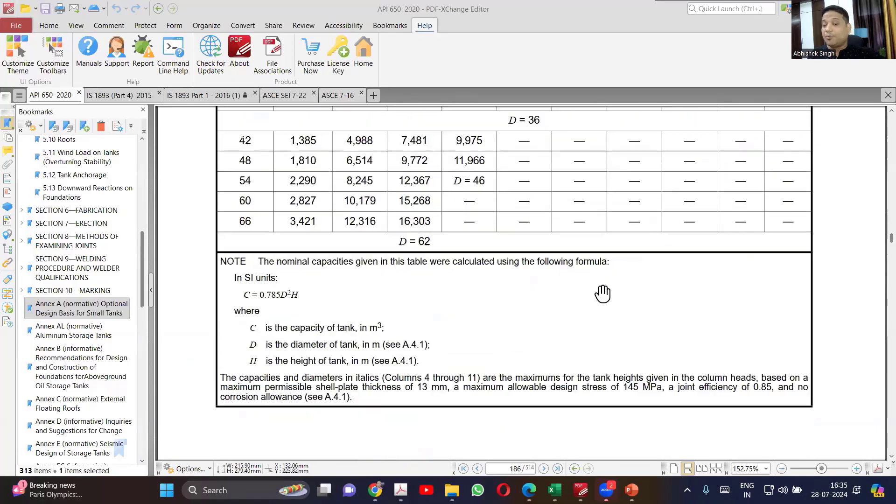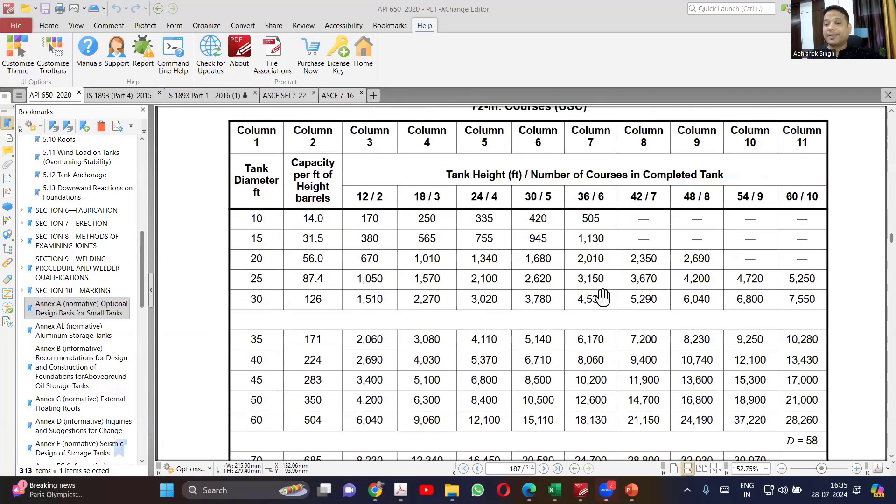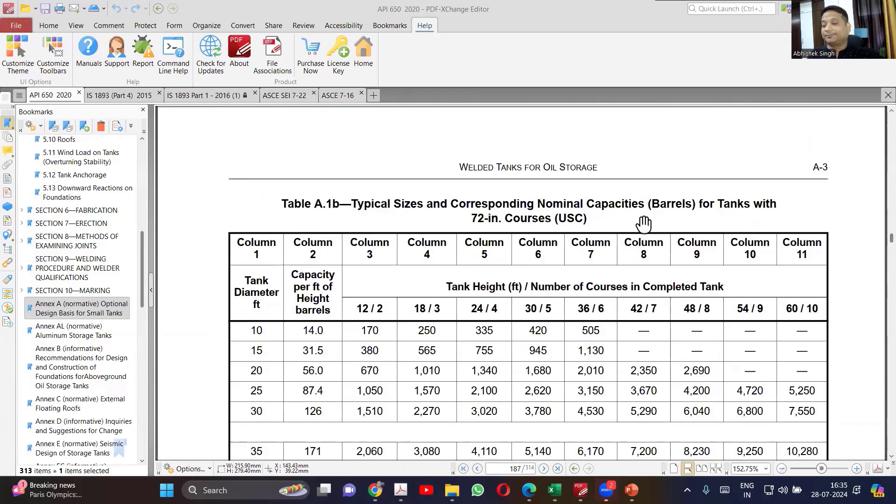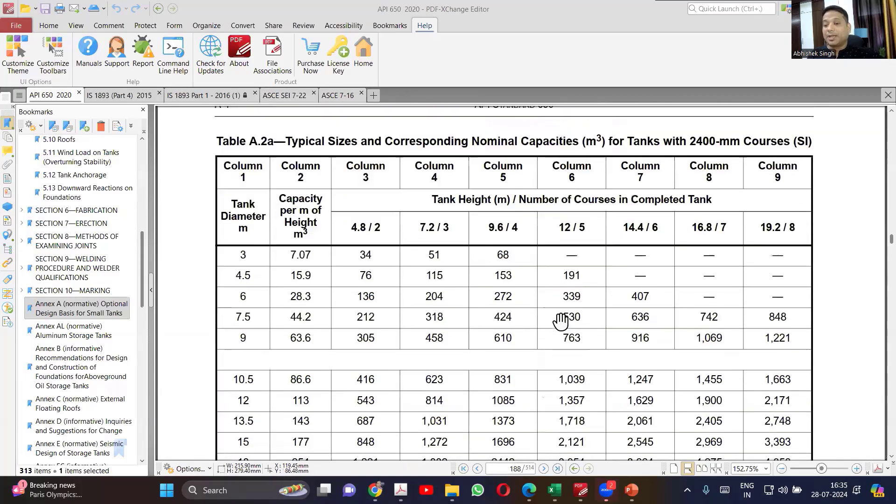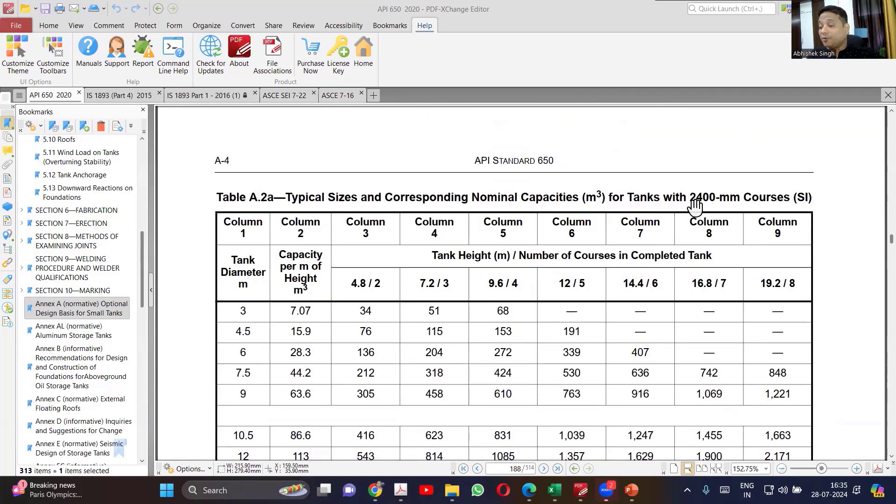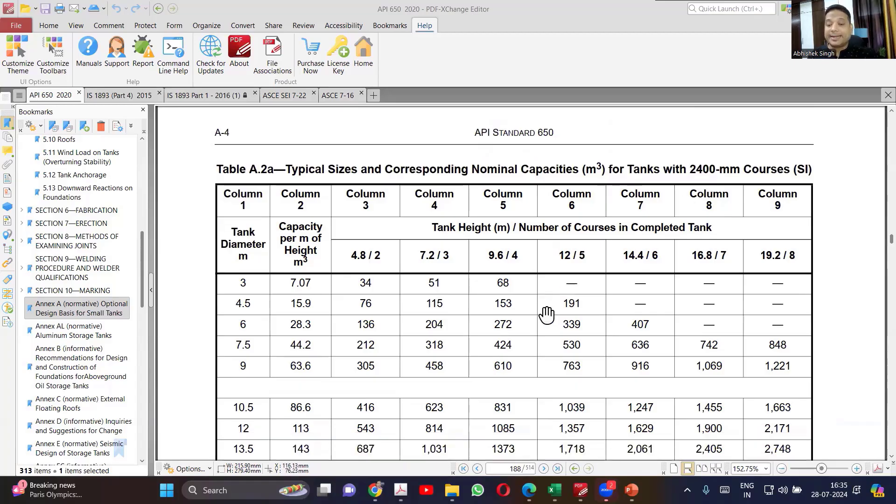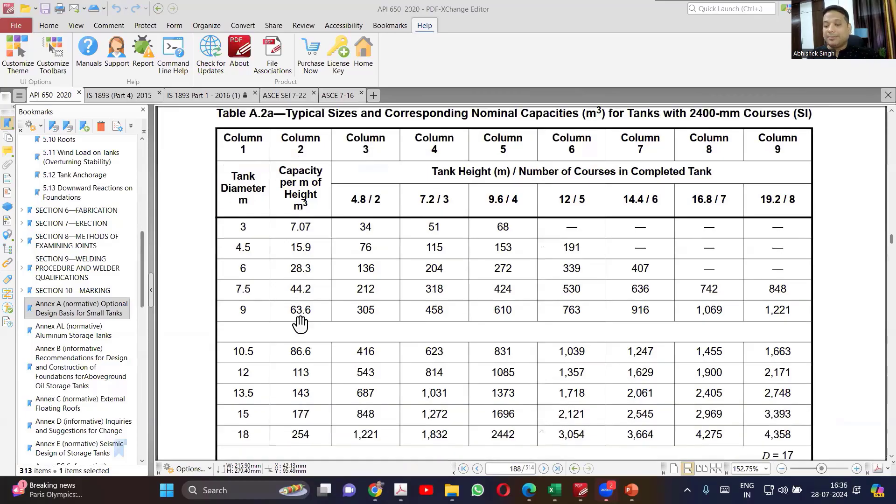Now if you have 2.4 meter width, this is USC. If you have 2.4 meter shell courses, in that case you will be using the second table, which is table 8.2B. And by using that, you can select the sizes based on whatever capacity you need.